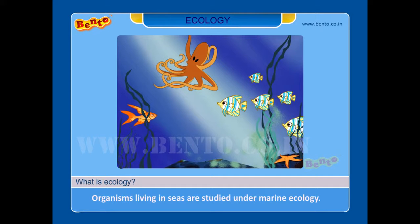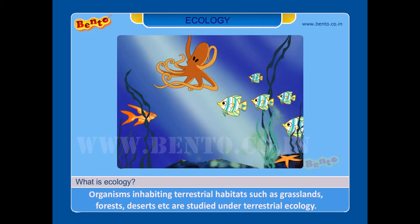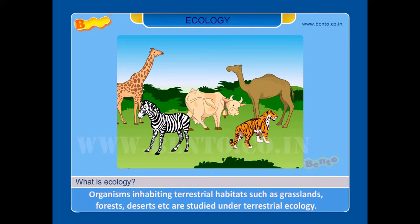Organisms living in seas are studied under marine ecology. Organisms inhabiting terrestrial habitats such as grasslands, forests, deserts, etc. are studied under terrestrial ecology.